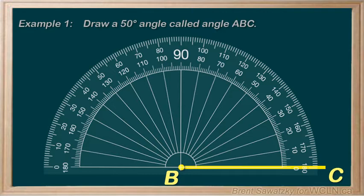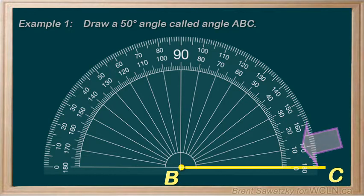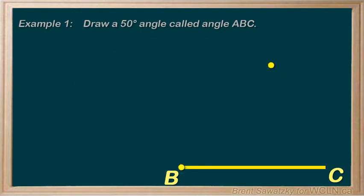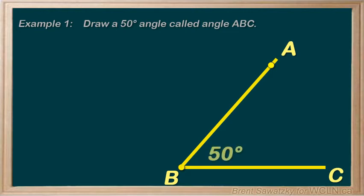Now we can line up our protractor the same way that we did when measuring — the midpoint of the protractor on the vertex, and the zero line on our line BC, our reference side. From our reference line BC, we measure 10, 20, 30, 40, and 50, and we make a little dot here at 50 degrees. We draw our angle side AB by drawing a line from B through our new dot, mark and label it as A. We have our angle ABC, marked at 50 degrees.